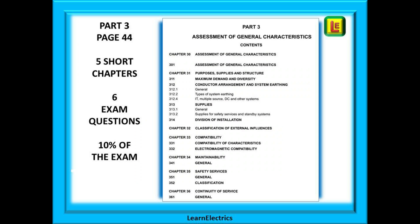Part 3 begins on page 44 of the wiring regulations book. It's just nine pages in length with some very short chapters. However, it relates to an important part of our work so expect at least six questions on this topic. This equates to 10% of the exam.